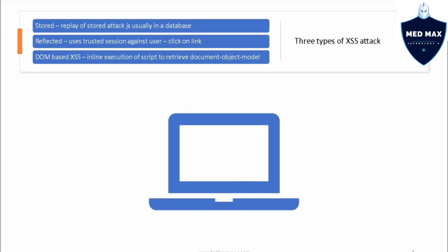With reflected XSS, when the user clicks on the malicious link it loads into the browser and executes the script against the client's browser. The third type is DOM-based cross-site scripting — based on the Document Object Model — which allows inline execution of script. This is very browser-specific, and many outdated browsers are particularly subject to this type of attack.